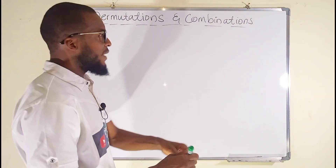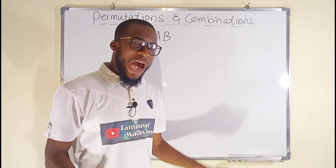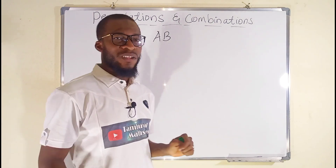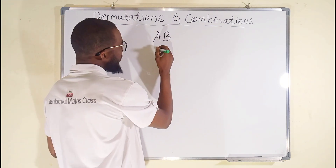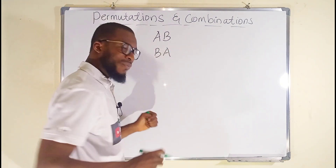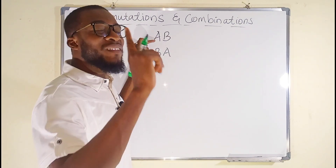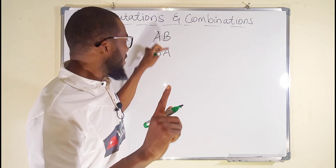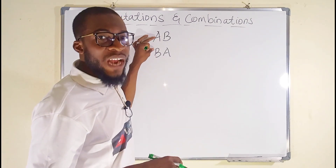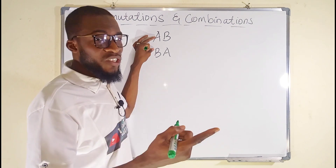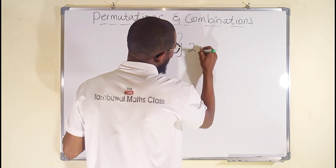Suppose we have two letters A and B. The question is: how many ways can we arrange these letters? We can arrange them in two different ways — AB and BA. So we have two different arrangements, but a single combination, because AB and BA are all letters A and B. We have two permutations here.